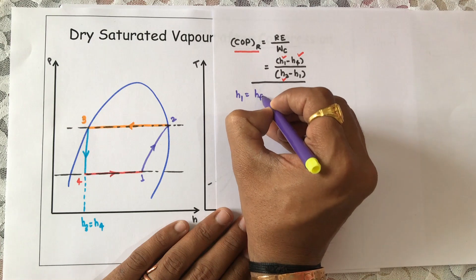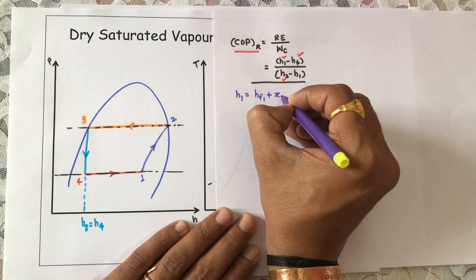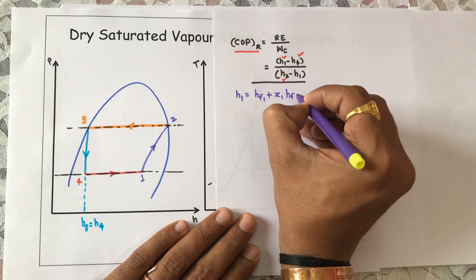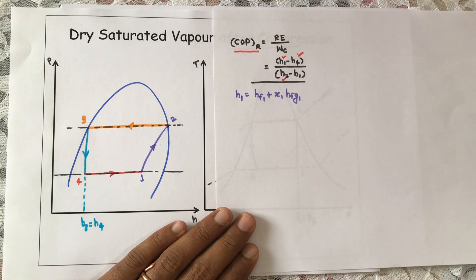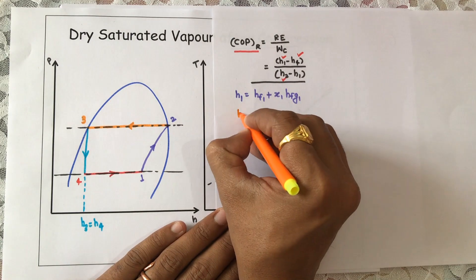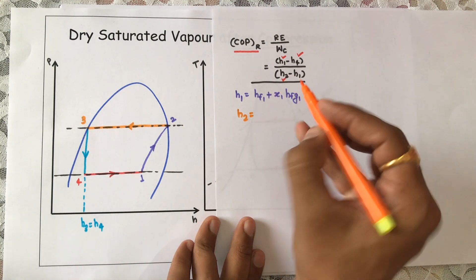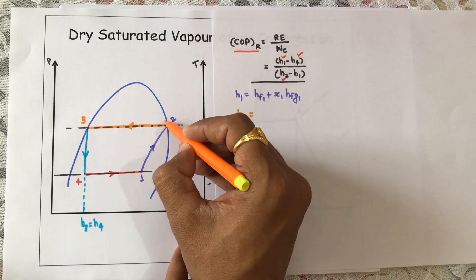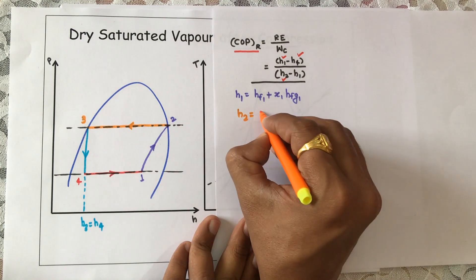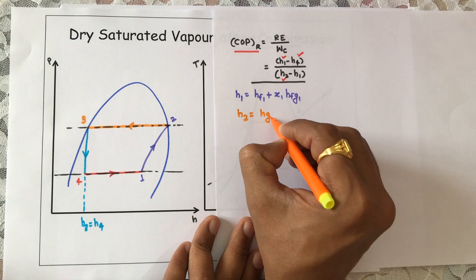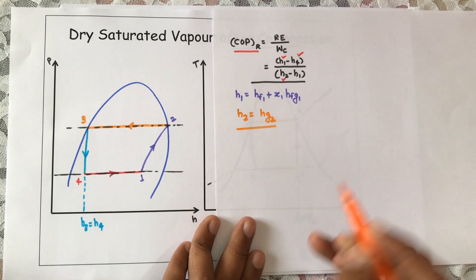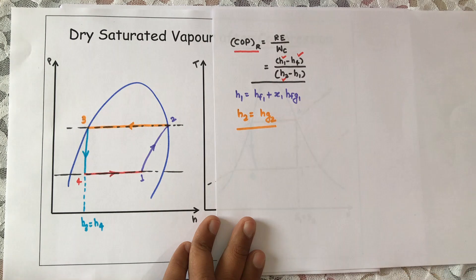Since h1 is inside the vapor dome, we can write h1 = hf1 + x1 · hfg1. Similarly, how can we calculate h2? Point number 2 is on the saturated vapor line, so h2 = hg2.